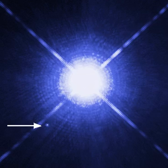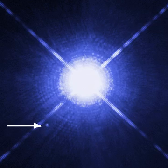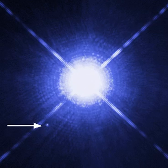White dwarfs are composed of one of the densest forms of matter known, surpassed only by other compact stars such as neutron stars, black holes, and, hypothetically, quark stars. White dwarfs were found to be extremely dense soon after their discovery. If a star is in a binary system, as is the case for Sirius B or 40 Eridani B, it is possible to estimate its mass from observations of the binary orbit. This was done for Sirius B by 1910, yielding a mass estimate of 0.94 solar masses, which compares well with a more modern estimate of 1.00 solar masses. Since hotter bodies radiate more energy than colder ones, a star's surface brightness can be estimated from its effective surface temperature, and that from its spectrum.